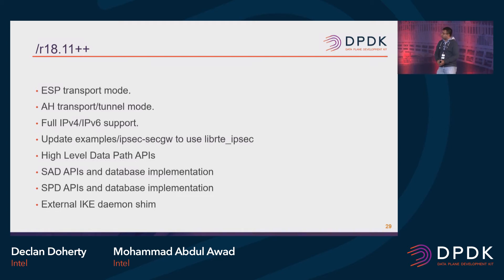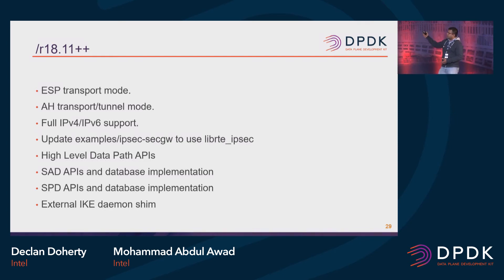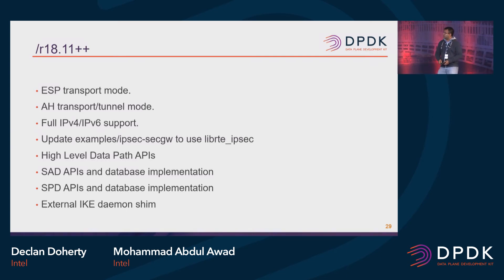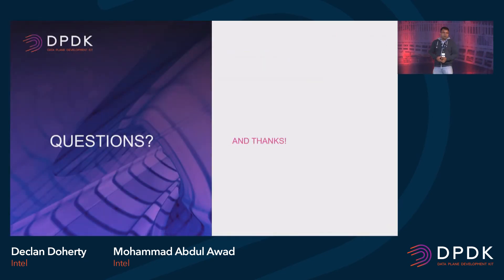We are not going to upstream any sample app right now. To test this functionality, we will provide some unit tests under a dpdk test suite. These are our initial targets, and then after that we have the subsequent roadmap. Obviously we have more discussion to have - we're welcoming more discussion. The roadmap includes transport mode, then most importantly the IPSec security gateway sample application, high-level APIs, SADB API, SPDB API, security policy, and also the IKE integration. We're looking for comments from everyone.